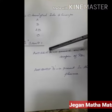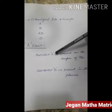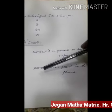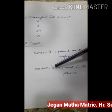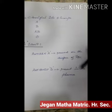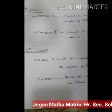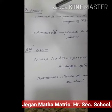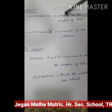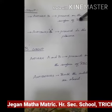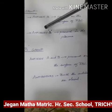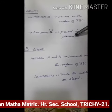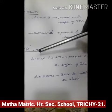A group: Antigen A is present on the surface of the RBC, and Antibody B is present in the plasma. B group: Antigen B is present on the surface of the RBC, and Antibody A is present in the plasma.